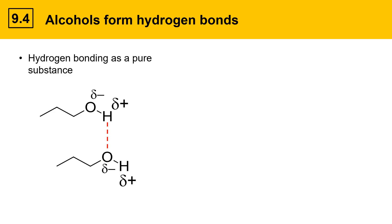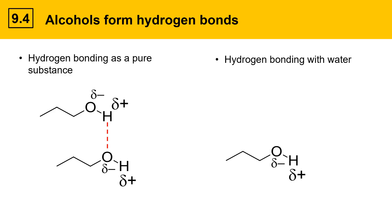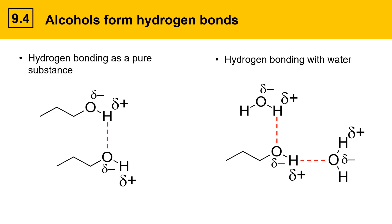Alcohols can also form hydrogen bonds with other species that have oxygens, nitrogens, or fluorines. One example is water. Here's an example of an alcohol again with its dipole, oxygen, and hydrogen showing. The alcohol can form hydrogen bonds with water: the partially negative oxygen of the alcohol can form a hydrogen bond with the partially positive hydrogen of a water molecule, and the partially positive hydrogen of the alcohol can form a hydrogen bond with the partially negative oxygen of another water molecule.